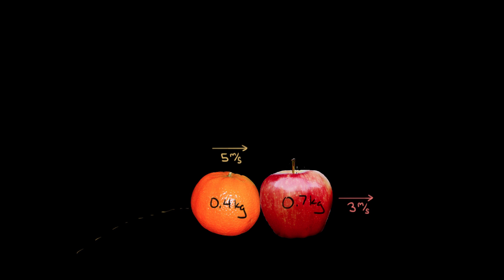One obvious question we can ask is: if three meters per second is the speed of the apple after the collision, what was the speed of the orange after the collision? What was the velocity of the orange — we'll call it VO for V orange — and which way was it going, left or right, immediately after the collision took place? Sometimes this isn't so obvious, so let's see if we can solve for this. We've got enough to solve.